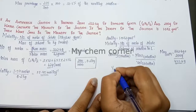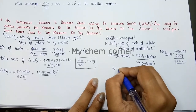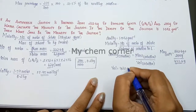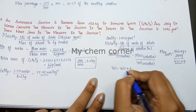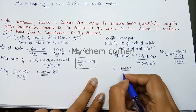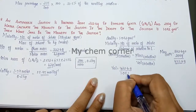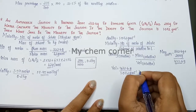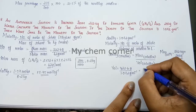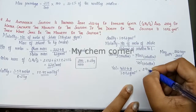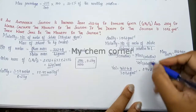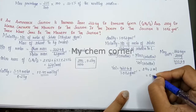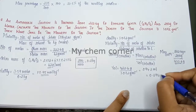Substituting into the density formula to find volume: volume equals mass divided by density, so 422.6 grams divided by 1.072 grams per mL. Grams cancel and we get 394.2 mL. Converting to liters by dividing by 1000 gives 0.394 liters.